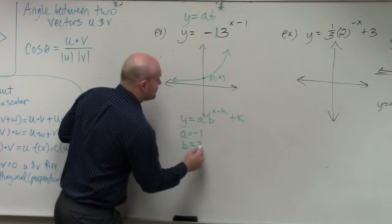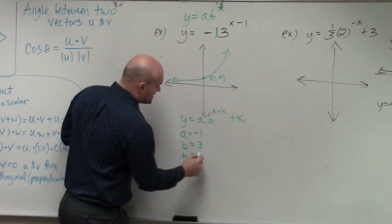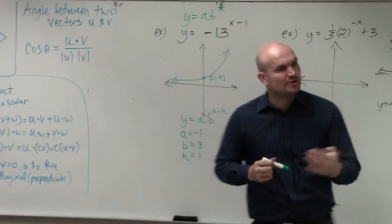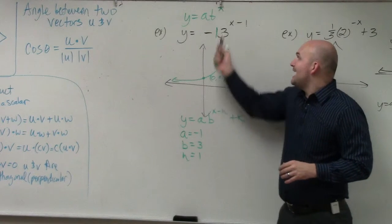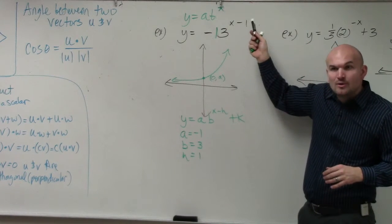b equals 3. And then h equals positive 1. Why is h equal 1? It's a negative. Yes, remember though, the formula is x minus h. So what is h? 1.